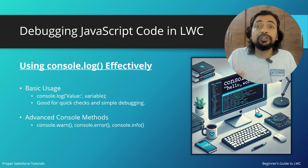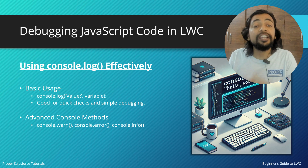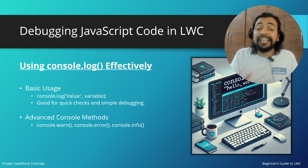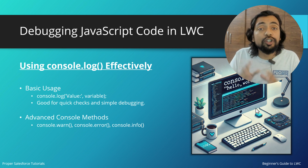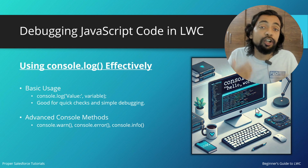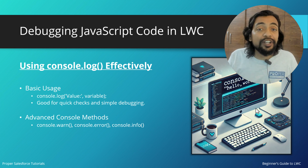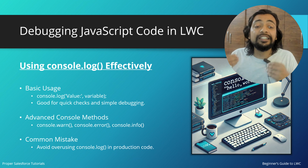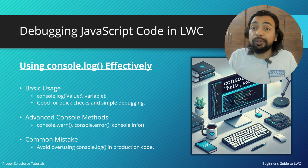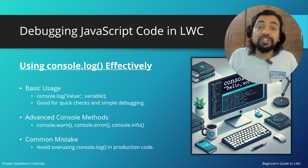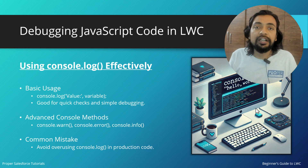For advanced console methods we have console.warn, console.error, and console.info. One common mistake when dealing with logs is using them in production code. In production, we generally try to omit console logs unless there is no other option.